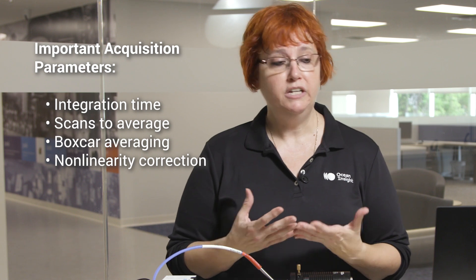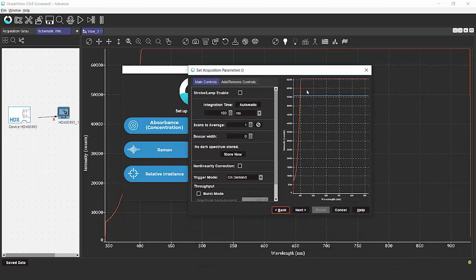The first thing that you're going to need to do is adjust your integration time. At 100 milliseconds, which is the default setting in the software, we are completely saturating the spectrometer.